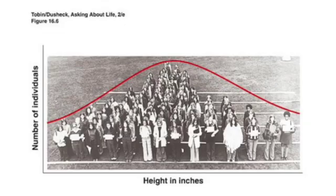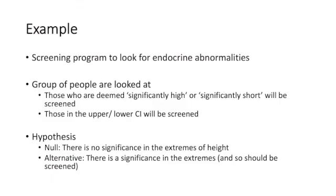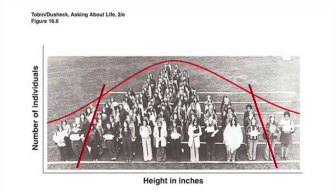We'll go back to our heights to flesh this out, as it can be a tricky concept. We've got all these people lined up in the class and we're going to do a screening program looking for endocrine abnormalities. We're going to screen two groups: those deemed significantly tall and those deemed significantly short. The null hypothesis is that there is no significance at the extremes of heights — i.e. if we ran endocrine screening tests on them there would be nothing wrong. We apply our 95% confidence interval, giving upper and lower limits, and those two groups on the left and right will subsequently go for screening.